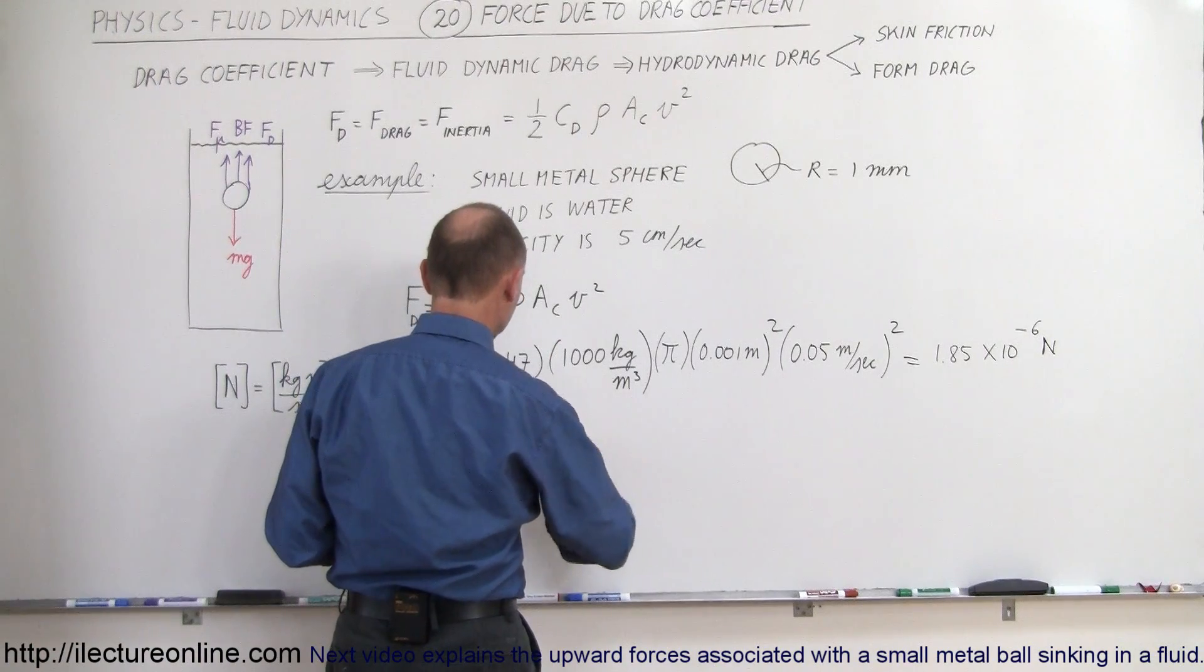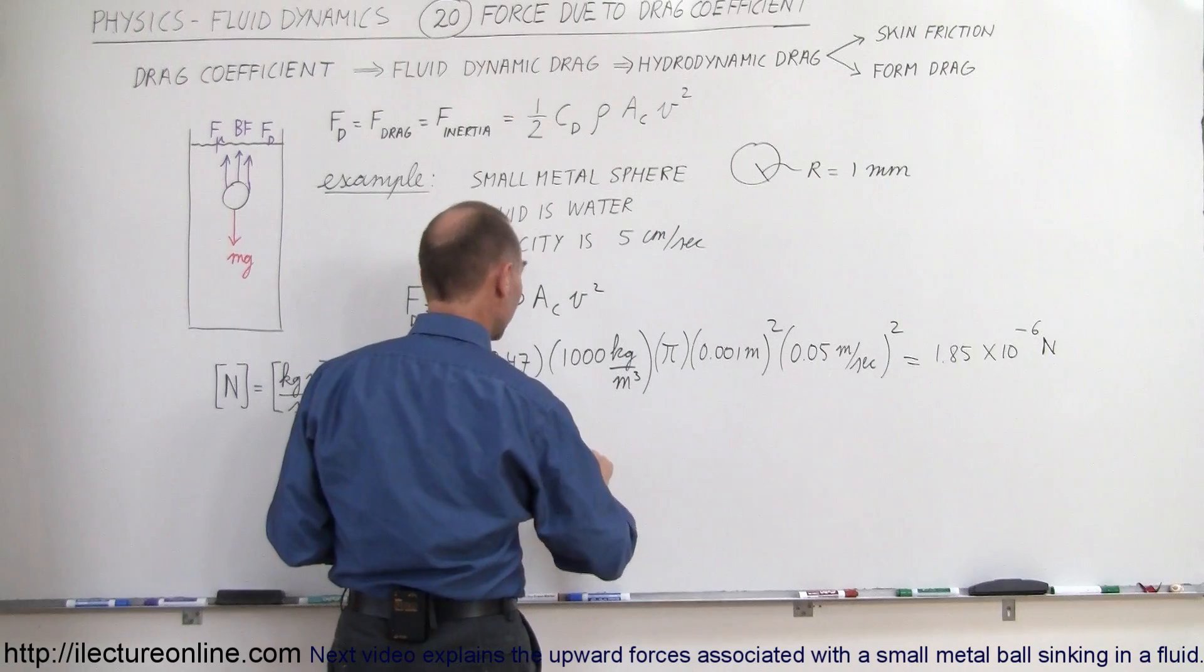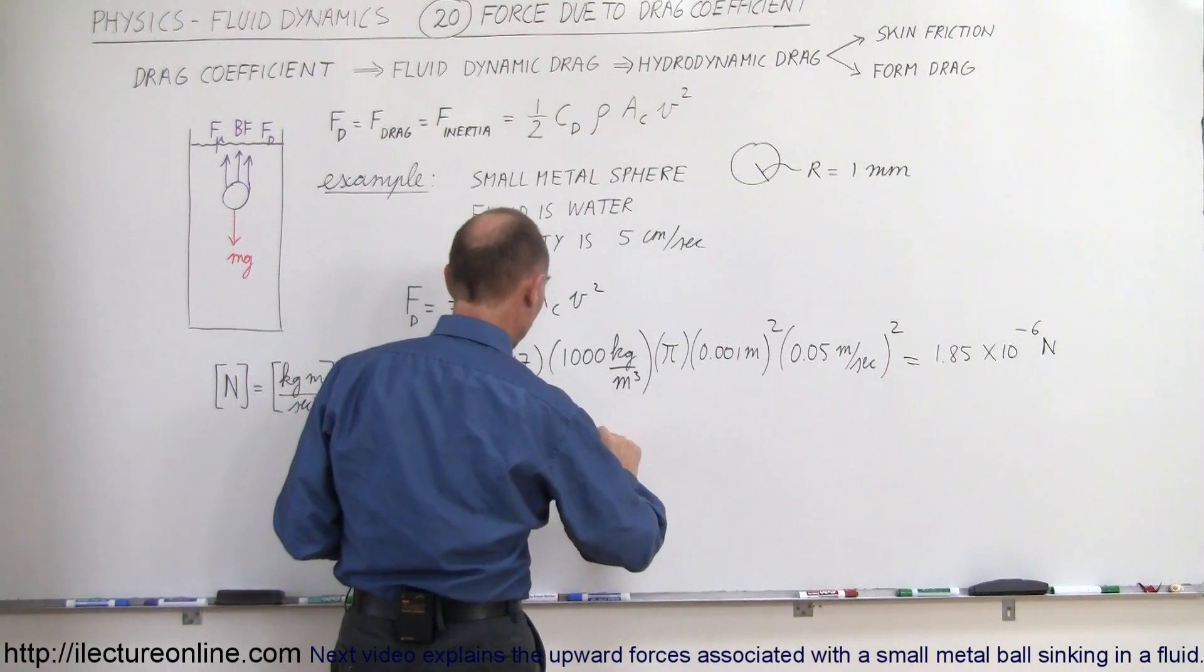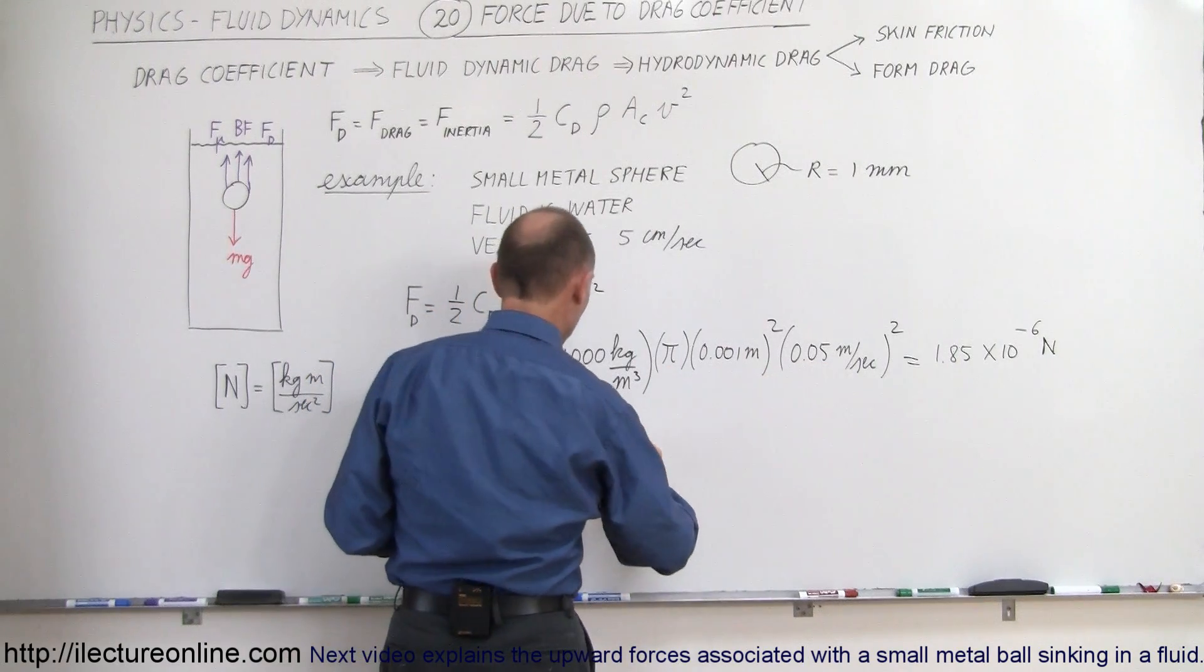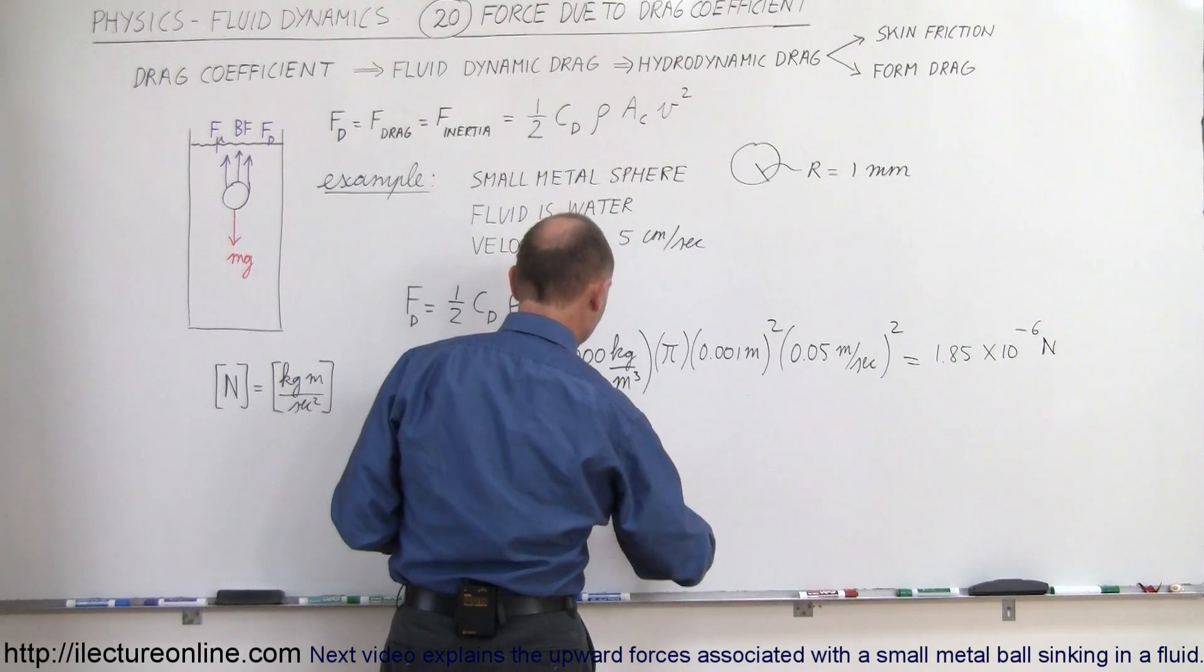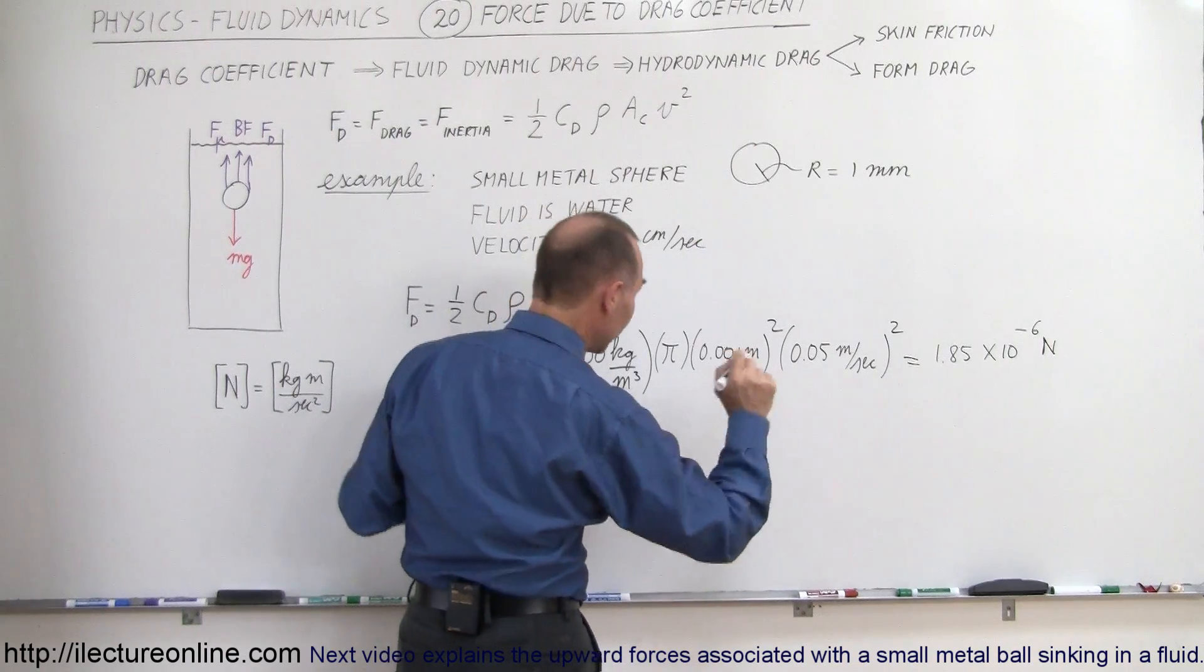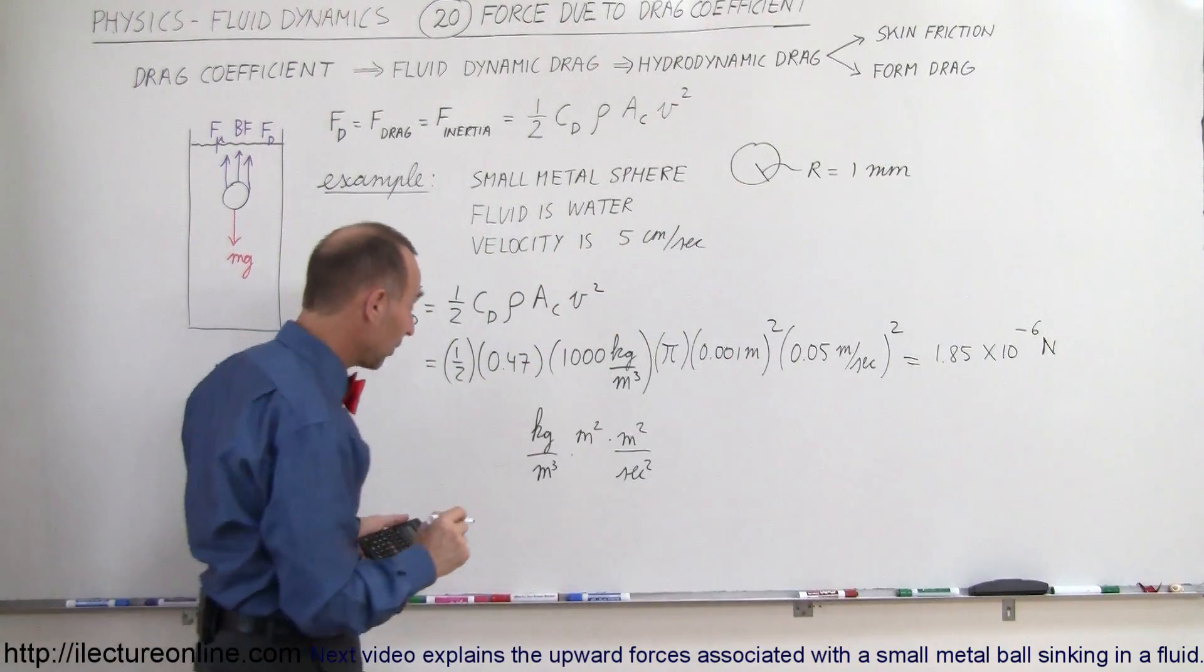So I have kilograms per meters cubed, so multiply it times meters squared, multiply it times meters squared, divided by seconds squared, and that is it. So let's see if that adds up to the proper units.